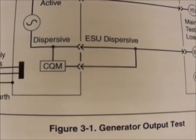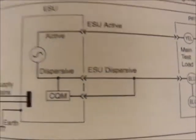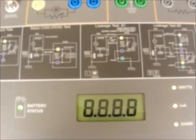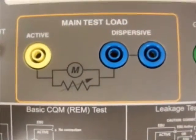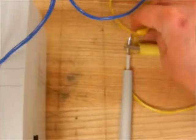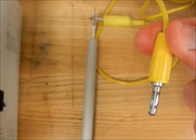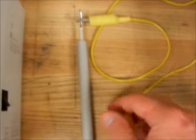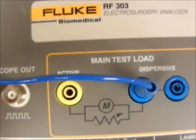Power output is measured in watts. So let's begin. First, we turn on the RF 303 electrosurgical analyzer and connect our inputs. We will connect the blue dispersive or patient plate electrode to the main test load dispersive port. We will then connect our active electrode, or pin electrode, to our active port.